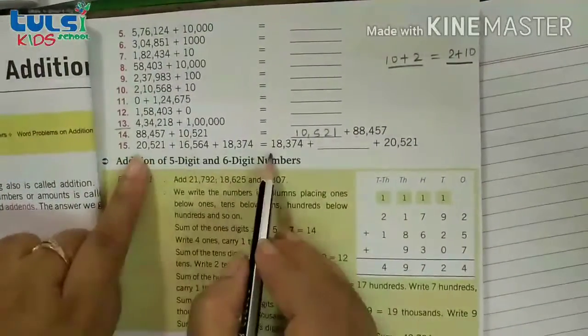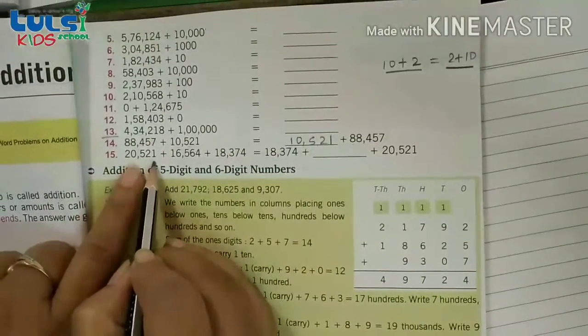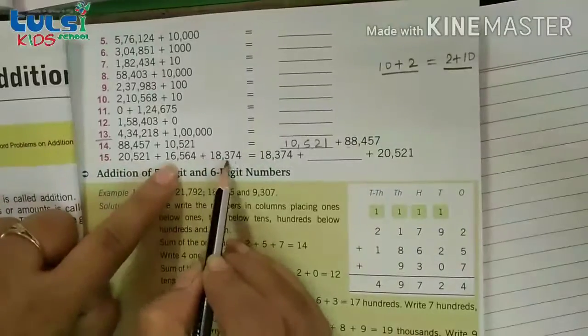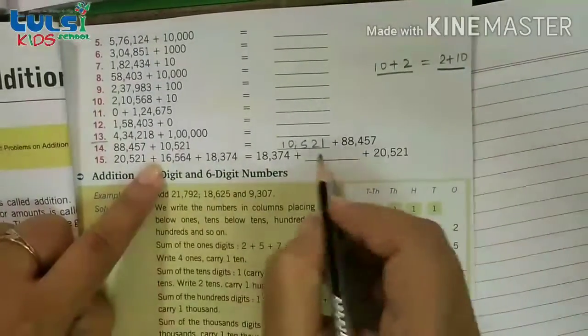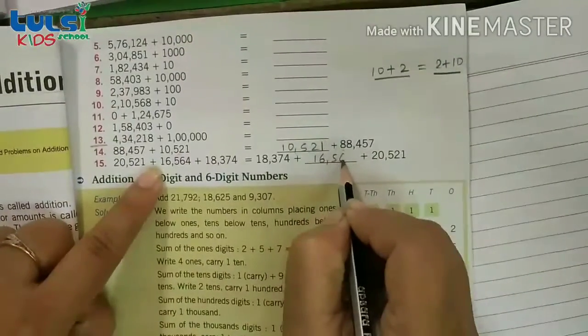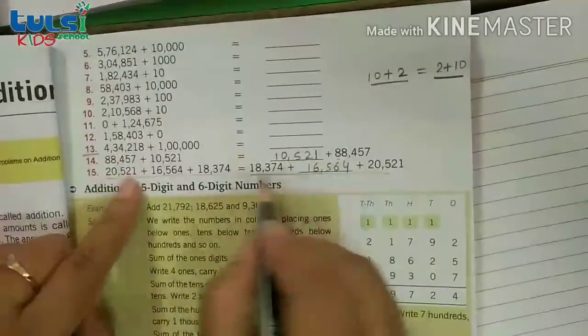Now in the same way neeche aapko ek aur question diya hua hai. 25021, 18374, bacha kiya? 16564. Yaha par joh 3 digit hai wohi 3 digit yaha par bhi hogi. Toh in doonho ka plus hamesha kaisa hooga? Same.